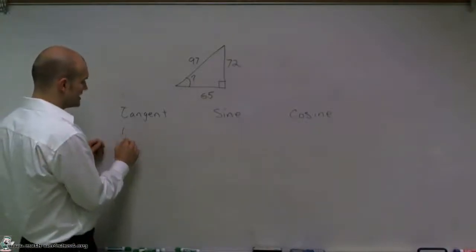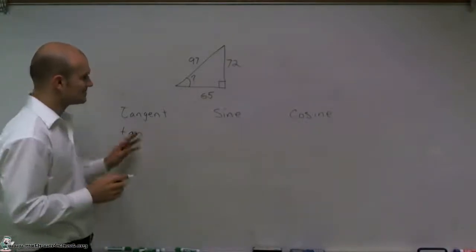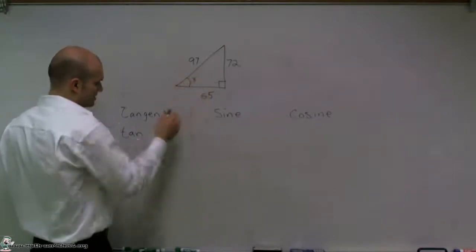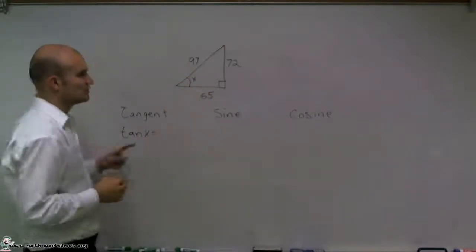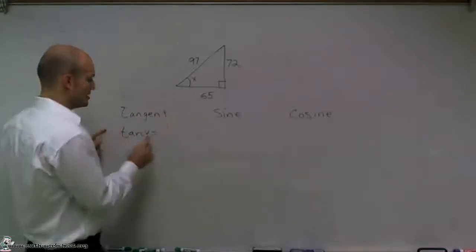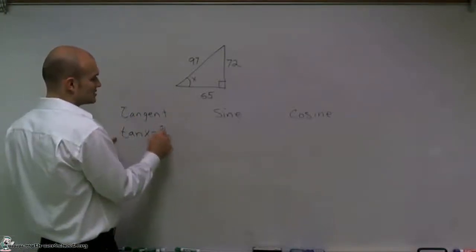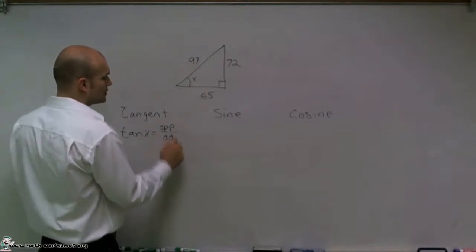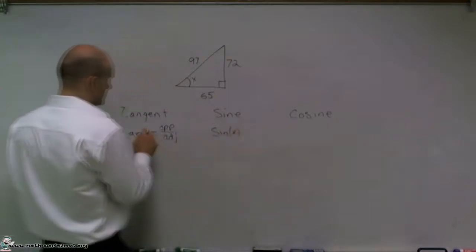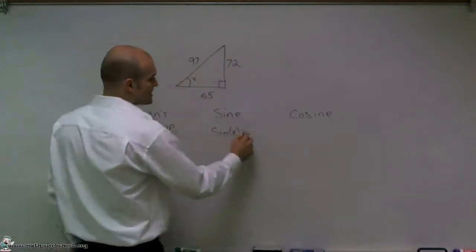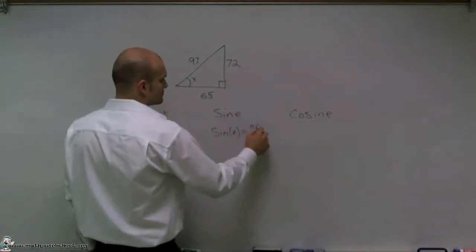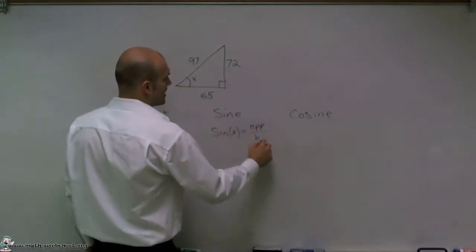The tangent, if I want to find the tangent of my angle, let's replace this question mark with x. The tangent of x equals the ratio of two side lengths: your opposite over your adjacent. The sine function of an angle x represents the ratio of your opposite side length over your hypotenuse.